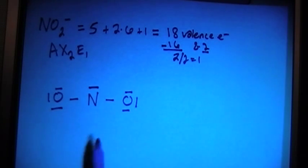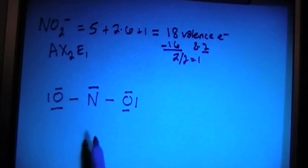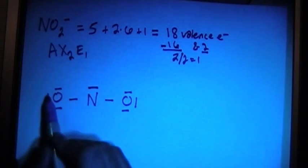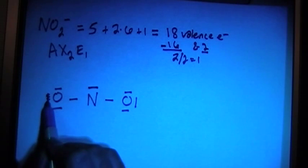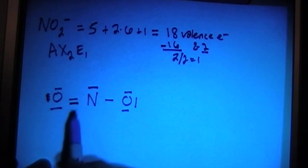Now, if we look at this, this has the 18 valence electrons, but the nitrogen only has six electrons, so it's short by two of its full octet. So there's one thing that we can do to fix this. We can move one of these electron pairs and make this a double bond, so now there's two, four, six, eight...